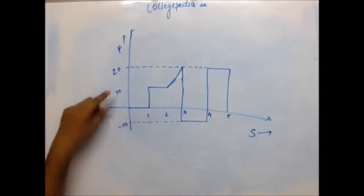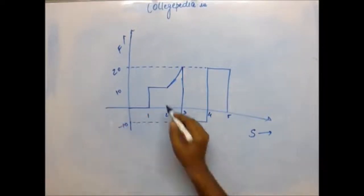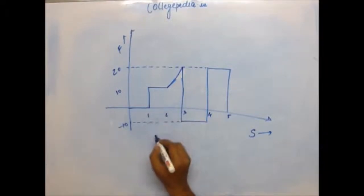Work from first unit to two units is force into displacement. Force is kept constant at 10 into displacement of one unit. So work done from here to here is 10.